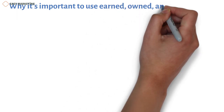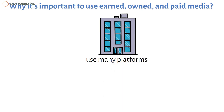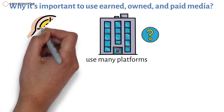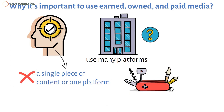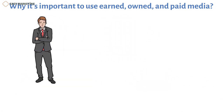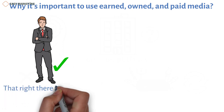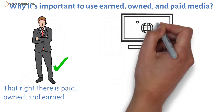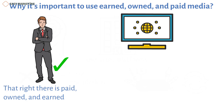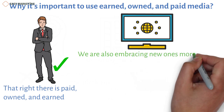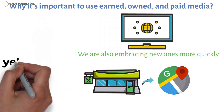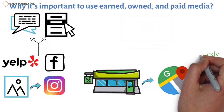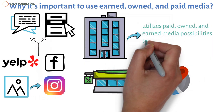Why is it important to use earned, owned, and paid media? Campaigns that use many platforms to reach consumers perform well. We frequently have limited attention spans and don't focus much attention on a single piece of content or one platform. However, we are more likely to recall something if it is mentioned repeatedly across several platforms in various posts and advertisements, and more likely to become interested if we hear about it from someone we trust. A variety of digital platforms constitute the foundation of our lives, and very few people spend their entire online time in one location. Consider searching for a restaurant reservation: you may search Google Maps for nearby restaurants, Yelp or Facebook for reviews and menus, Instagram for photographs of the food, and so on. A good company utilizes paid, owned, and earned media possibilities to be present anywhere a customer could seek for them.